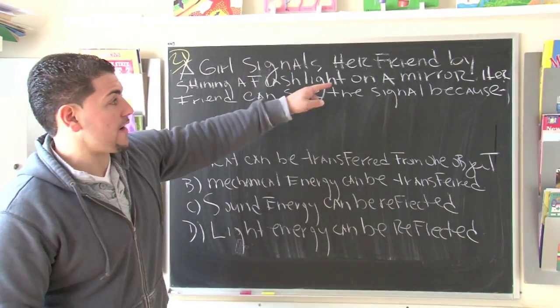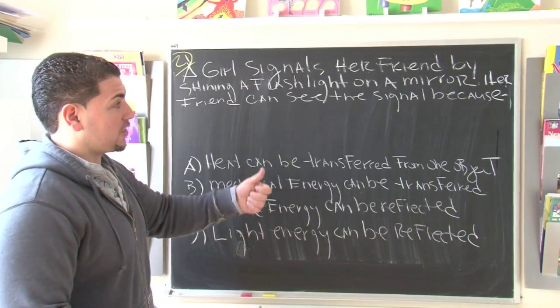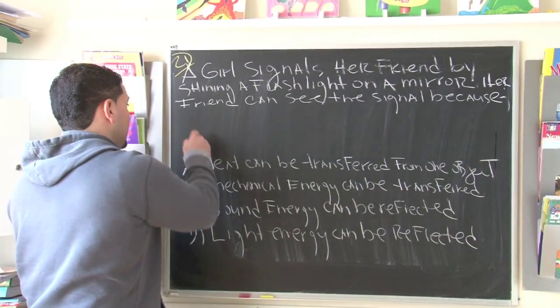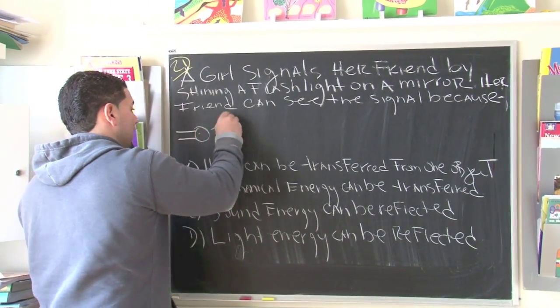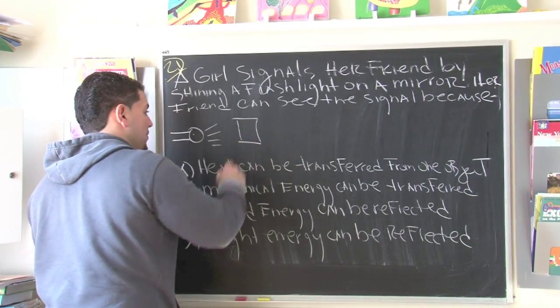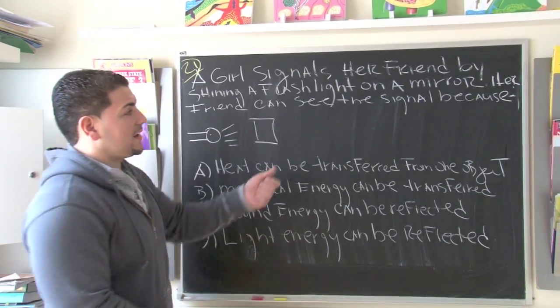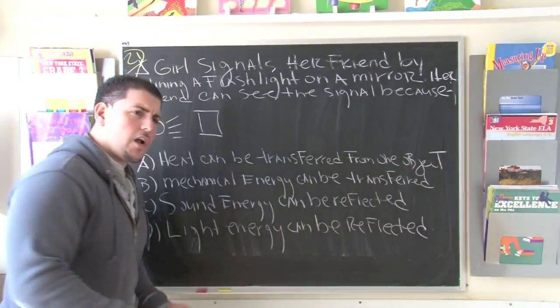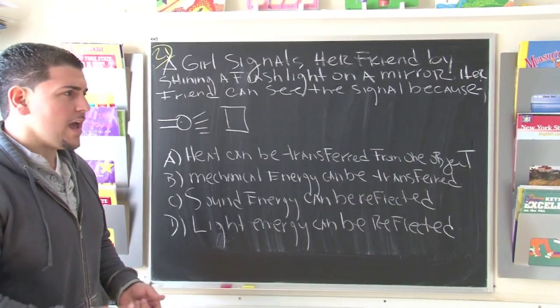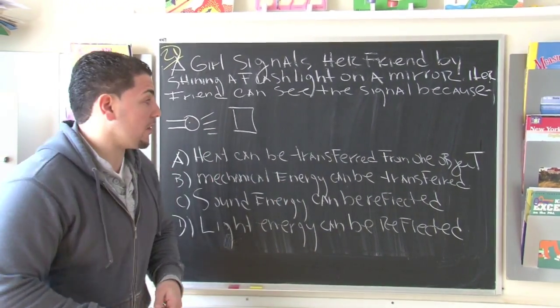A girl signals her friend by shining a flashlight on a mirror. Okay, so let's pretend this is a flashlight really quick. The light is coming out, it shines on a mirror. Think about it like that. It says her friend can see the signal because... So we're trying to figure out why her friend can see the signal after she shines the flashlight on a mirror.